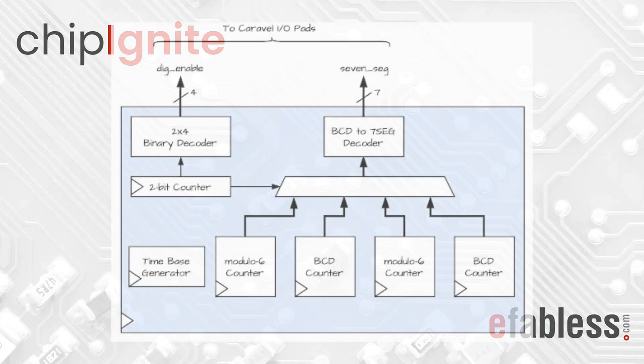The design is a simple seconds and minutes clock that drives a four-digit multiplex seven-segment display connected to Caravelle IO pads. The design gets the clock and reset signal from the Caravelle Management SoC. The following block diagram outlines the design, which consists of BCD and Modulus 6 counters and the associated multiplexing logic.